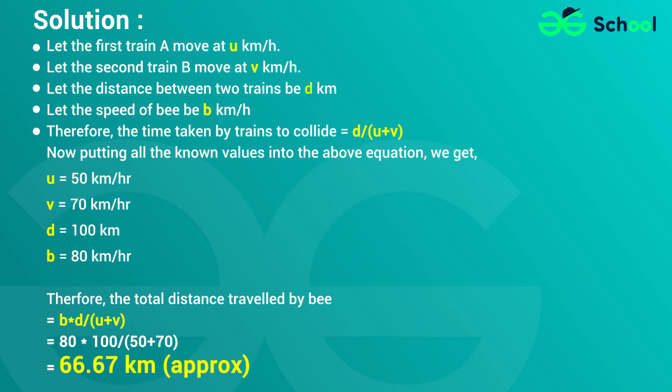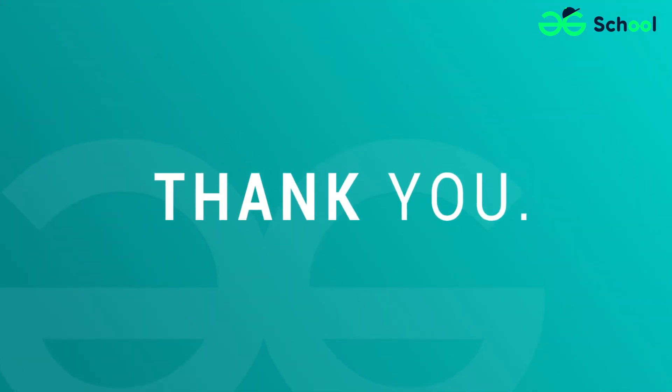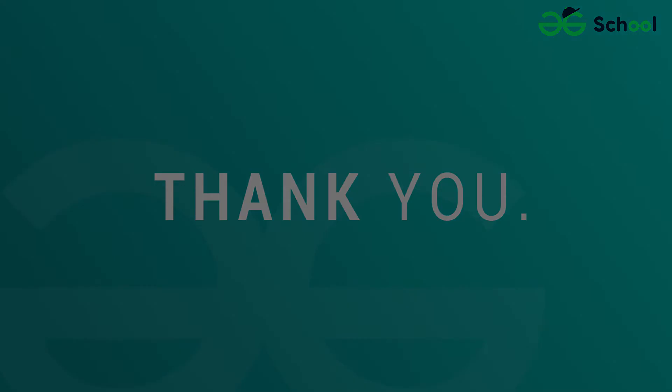Now putting all the known values into the above equation: U is equal to 50 km per hour, V is equal to 70 km per hour, D is equal to 100 km, and the speed of B is equal to 80 km per hour.